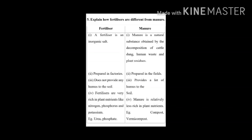In the manure column: first, manure is a natural substance obtained by the decomposition of cattle dung, human waste, and plant residues; second, can be prepared in the fields; third, manure provides a lot of humus to the soil; fourth, manure is relatively less rich in plant nutrients. Examples: compost, vermicompost.